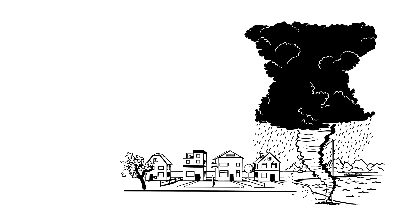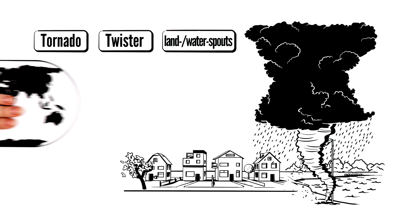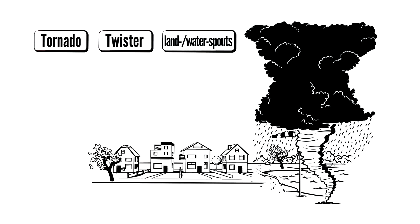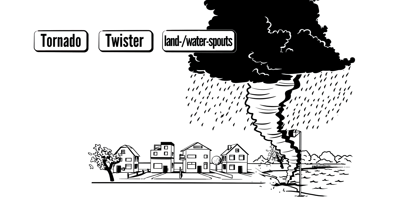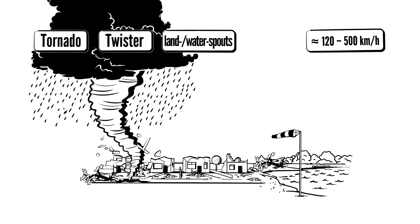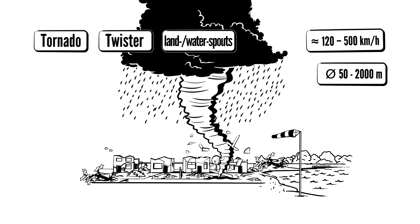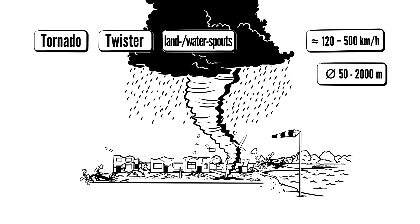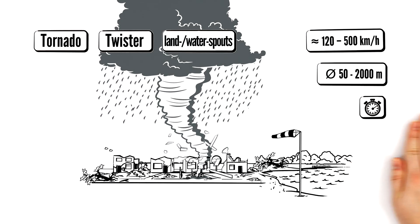We call these whirlwinds tornadoes, twisters, or land and water spouts because all of them can form on water and on land in moist humid warm areas. You even get them in Europe. These whirlwinds can happen completely out of the blue and at speeds of up to 500 kilometers per hour, they can do a lot of damage. Their diameter ranges from 50 meters to 2000 meters. Due to friction on the ground, they lose their energy and usually die down within a few minutes.